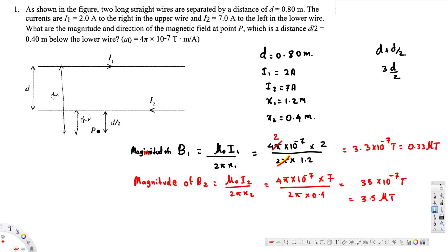Now let's find the directions. For i1, if you point your thumb in the direction of that current and curl your fingers, at point P the field goes inside the page. So B1 is directed into the page. For i2, pointing your thumb in its current direction and curling your fingers, at point P the field comes out of the page. So B2 is directed out of the page.